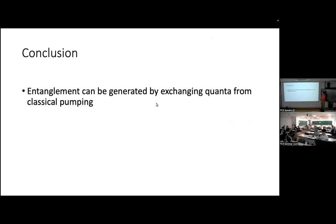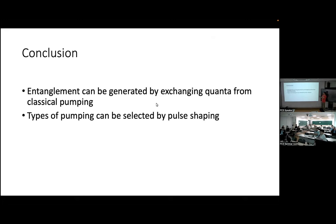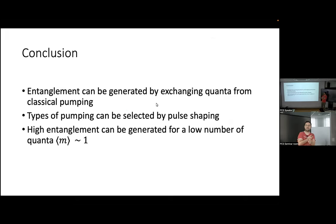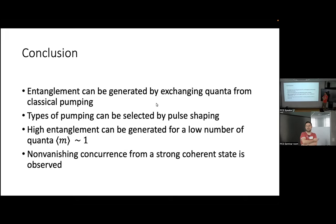Before the conclusion: we see that entanglement can be generated by classical pumping. Our contribution was to consider this short pumping, which may be interesting for experimentalists since this pumping is available in experiment. We have studied that the types of pumping can be selected by pulse shaping. High entanglement can be generated for a low number of quanta, which is interesting. Non-vanishing concurrence from a strong coherent state is observed — this is a little less intuitive, because we have a classical object which generates entanglement.